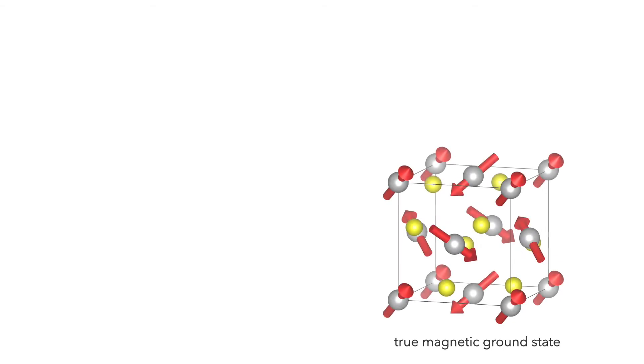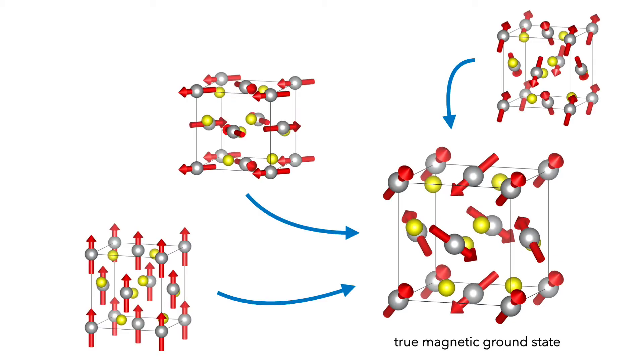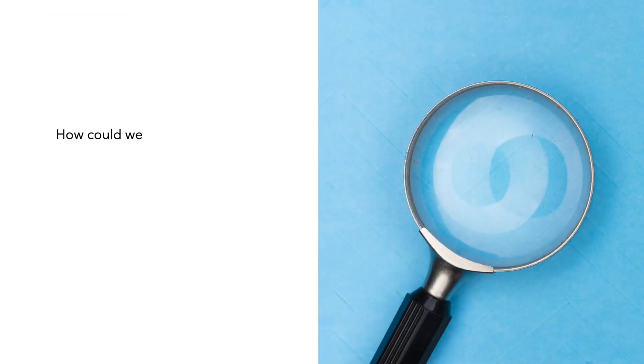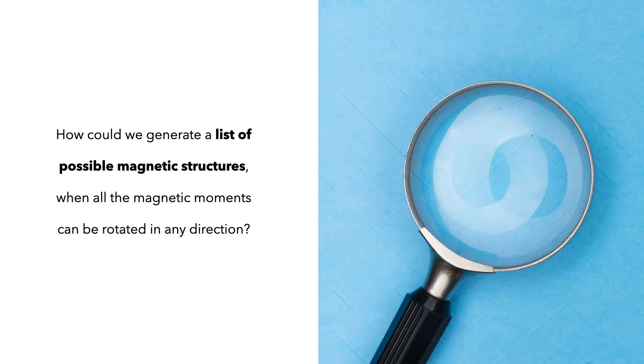A key issue to get a good prediction from such a calculation is to choose a good starting point that is already close to the true ground state. For magnetic structures, with their many variables, that had been too big of an issue. How could we generate a list of possible magnetic structures when all the magnetic moments can be rotated in any direction?